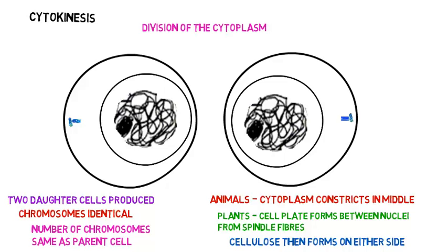Mitosis is the replication of genetic material and the division of that genetic material so that each daughter cell has an identical number of chromosomes — the same chromosomes in each daughter cell. Cytokinesis is the division of the cytoplasm to form two new daughter cells. Thank you for watching this presentation.